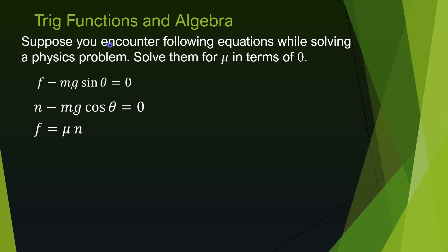Another problem gives three equations, two of which contain trig functions — sine theta and cosine theta. In this problem, trig is married to algebra to get an answer. The question asks you to solve for mu in terms of angle theta only, eliminating m, z, f, and everything else. Mu appears in the third equation, so we start there and solve for mu by moving n to the other side.